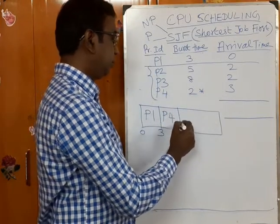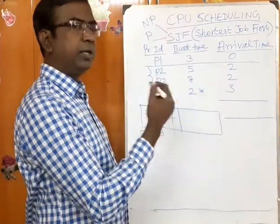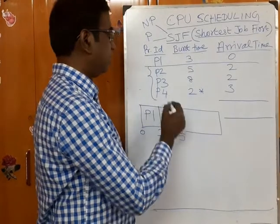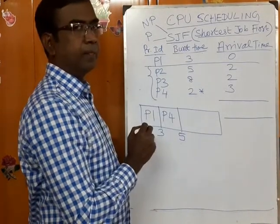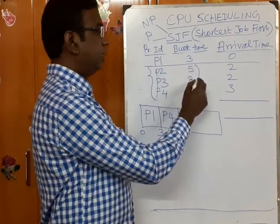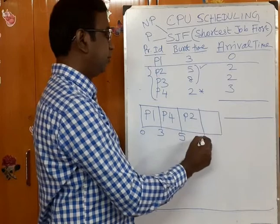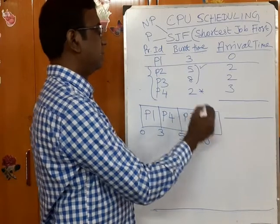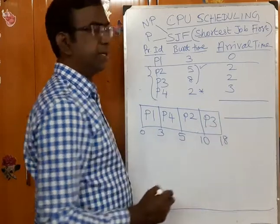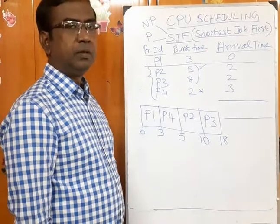P4 will enter into the CPU. Once it enters, it will work for 2 seconds, so it will come out after 5 seconds. P4 has completed. Now among the remaining two, P2 is the smallest, so P2 will enter and execute for 5 seconds — that is time 10. Finally, P3 will enter and execute for 8 seconds, completing at time 18.